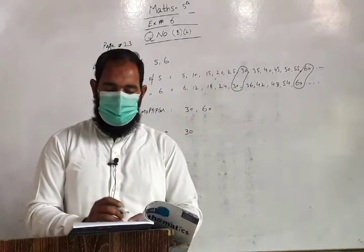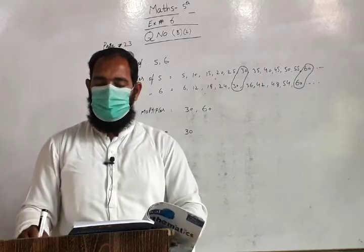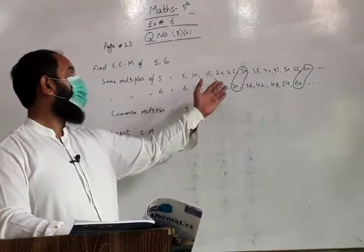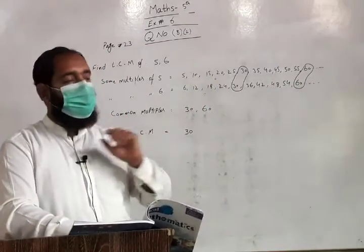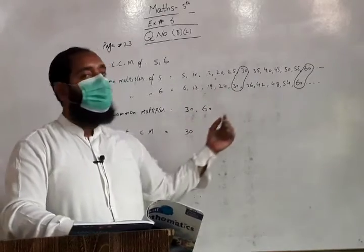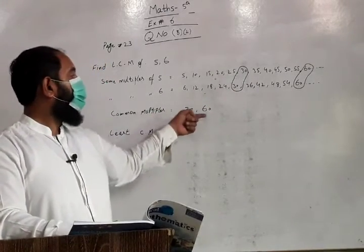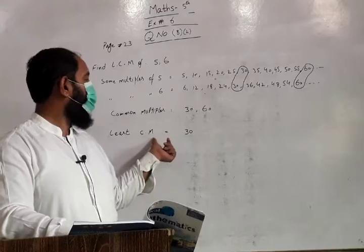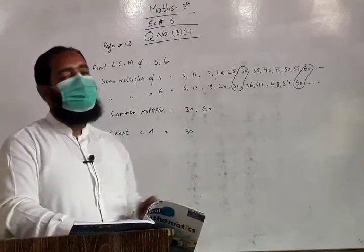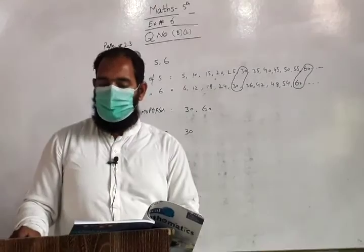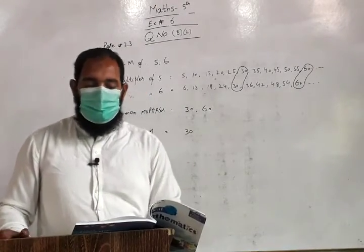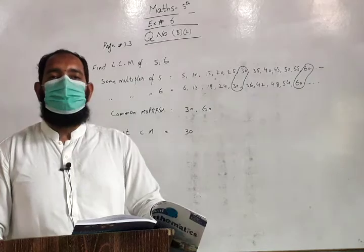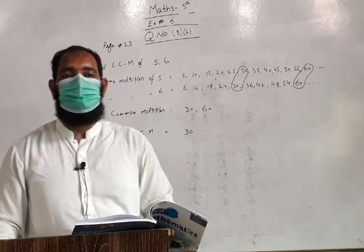Is question number B ke total yahan pe diye gaye hain, wo 10 parts hain. Saare isi rules ke mutabiq aap ne solve karne hain. Pehle multiple banana, multiple banane ke baad in mein se upar aur neeche jo diye gaye adad hain, jo aap ke paas multiples aayenge, in mein se jo common honge wo aap ne common multiple ke tor pe likhne hain. Aur in mein jo sab se chhota aap ka common multiple aaya hai, ise kahenge least common multiple, it's mean LCM. Wo as LCM ke tor pe mention kar liya jayega. Is ki kul das ajza hain, ye aap ne isi rule ke mutabiq aap ne khud bana kar jo reh gaye hain wo solve karne hain. Is ki assignment banana hai, test ki shakal mein se tayyar karna hai. Allah hafiz, Allah hafiz.